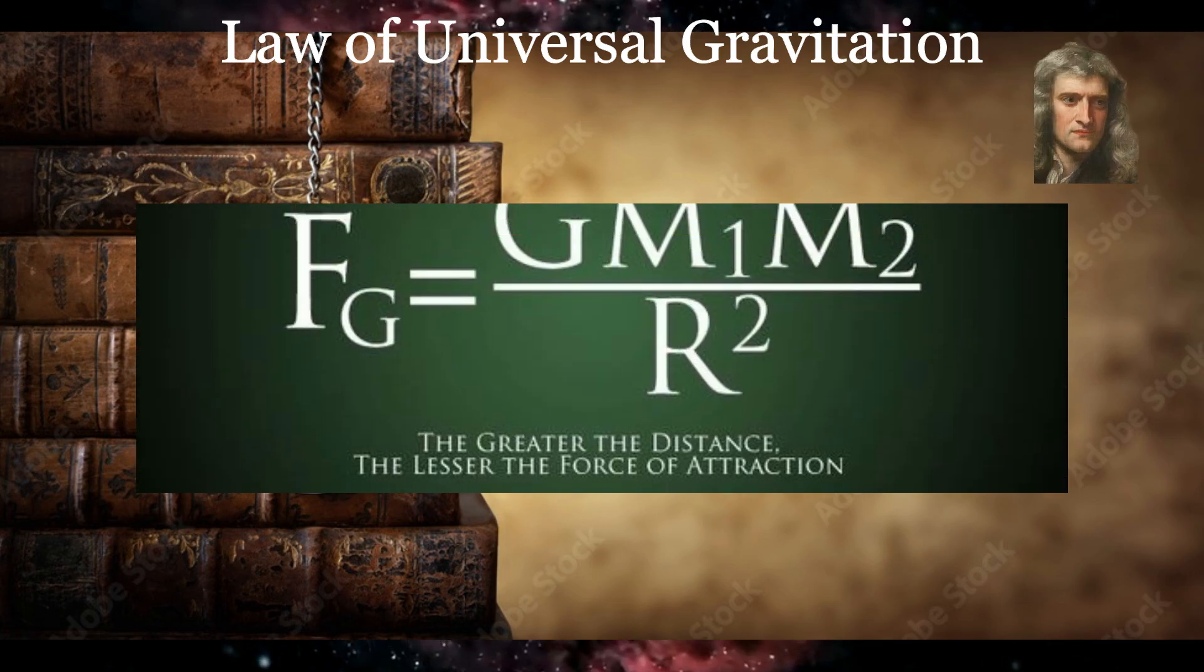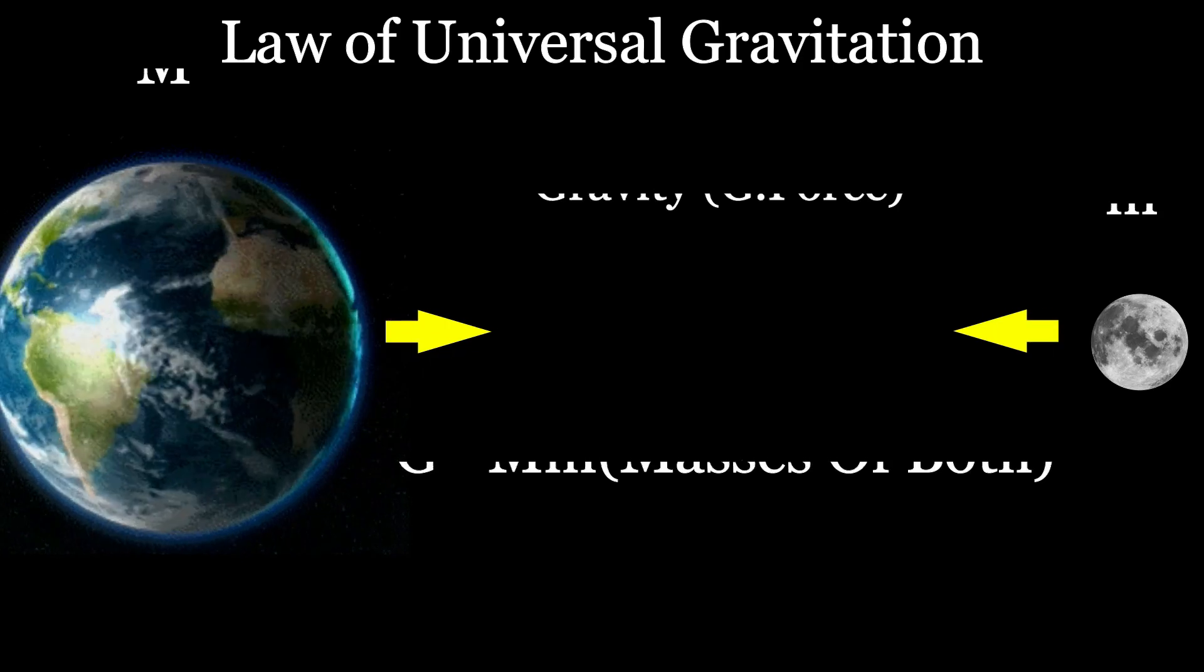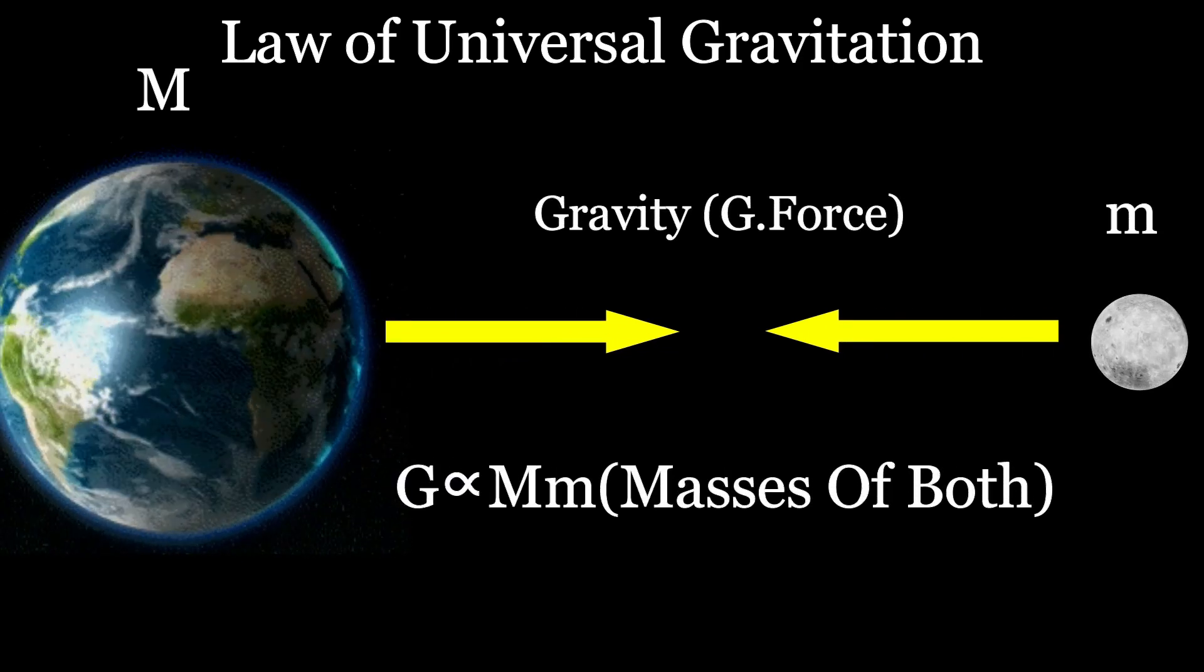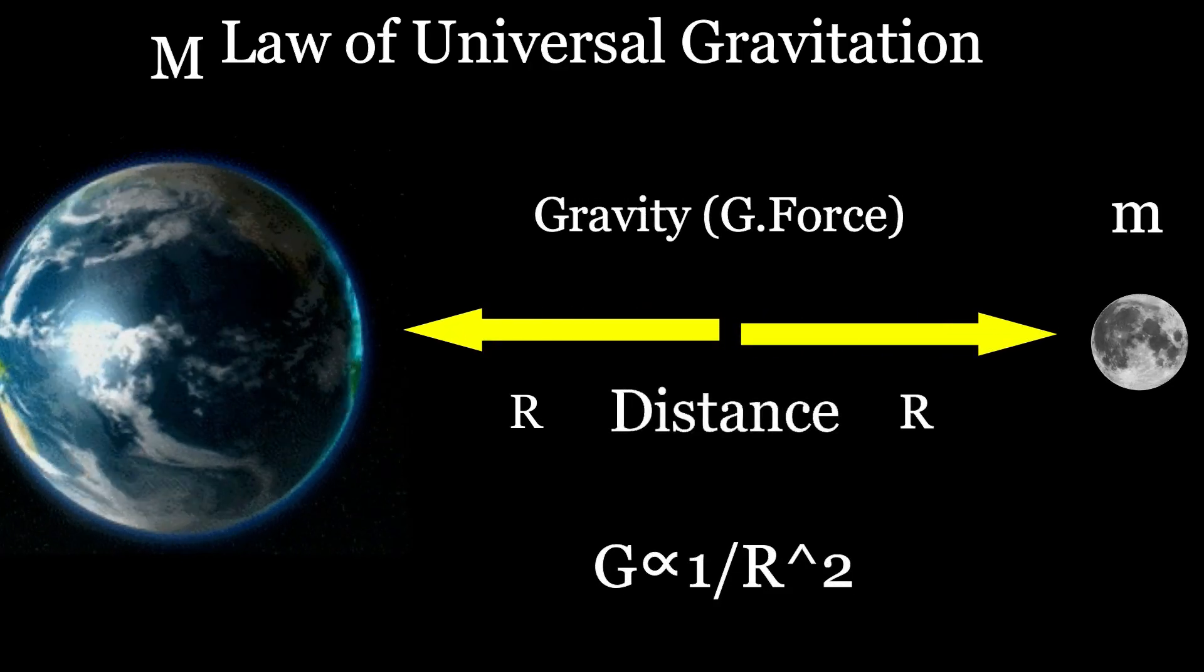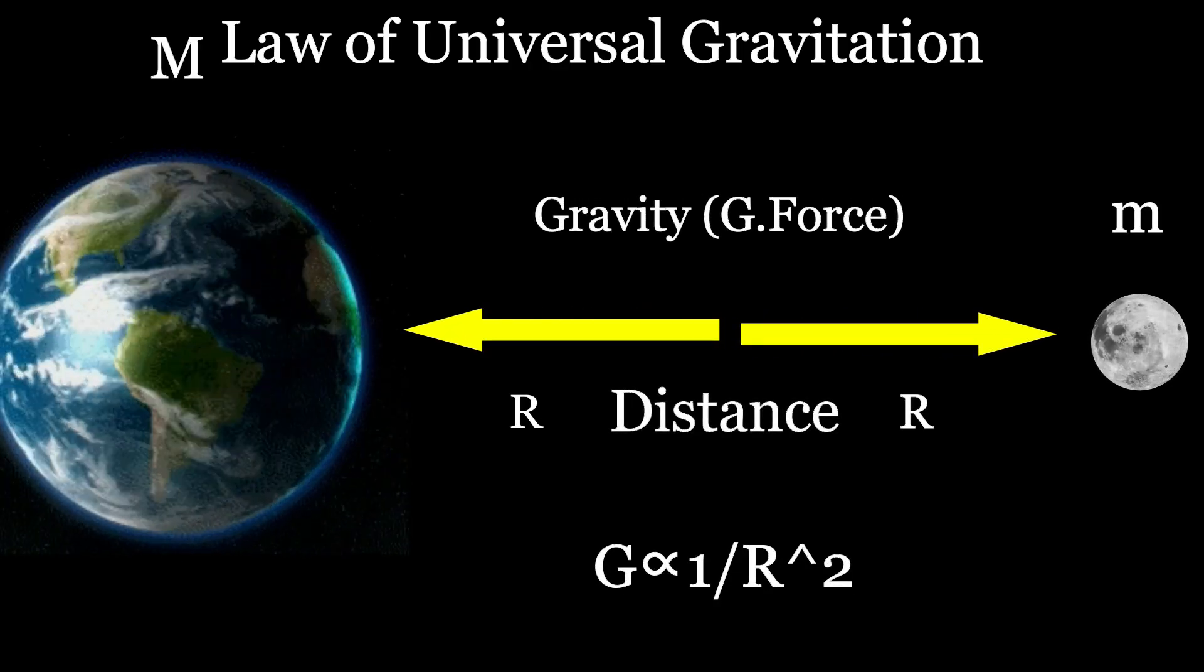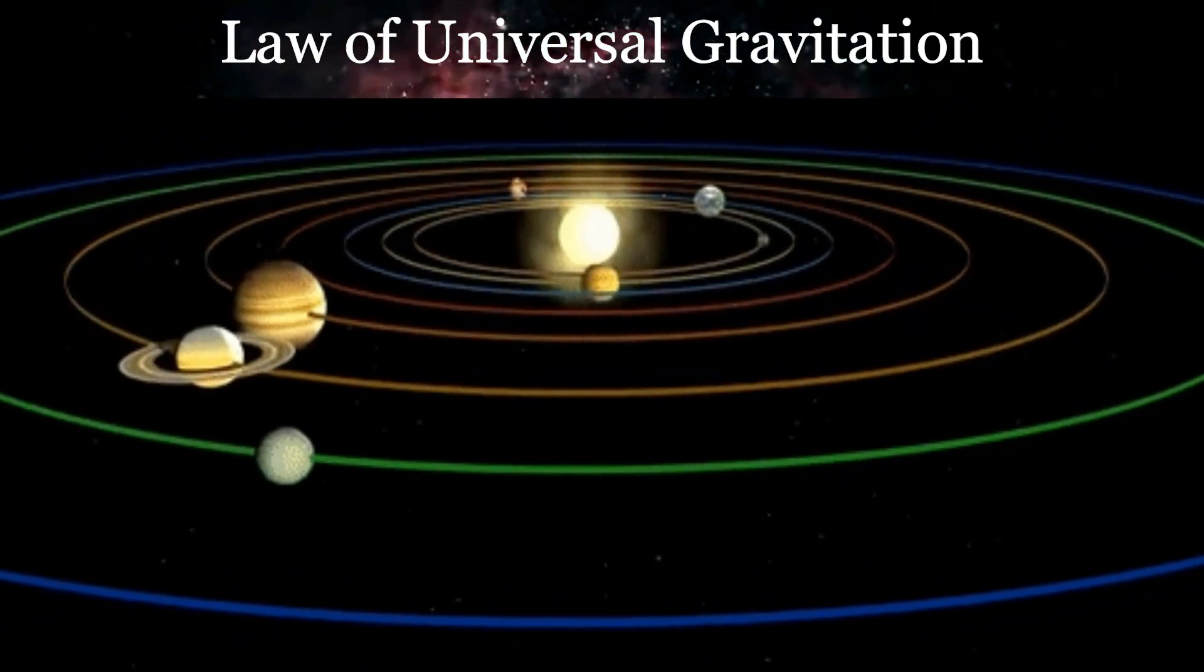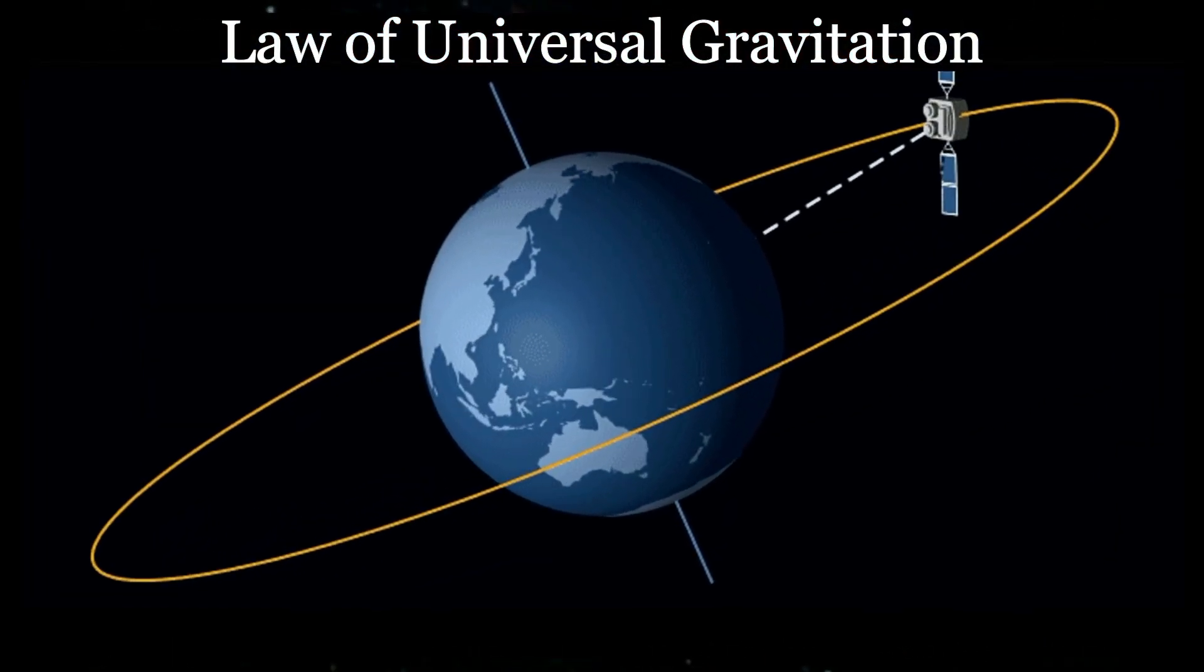Law of Universal Gravitation: This law, formulated by Newton, states that every object in the universe attracts every other object with a force proportional to their masses and inversely proportional to the square of the distance between them. This invisible force governs everything from the movement of planets around the sun to the tides on earth. It's the reason we stay grounded and why artificial satellites stay in orbit.